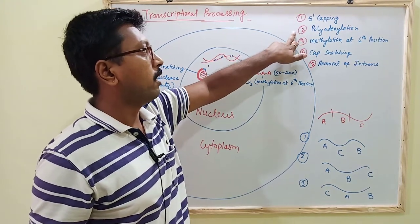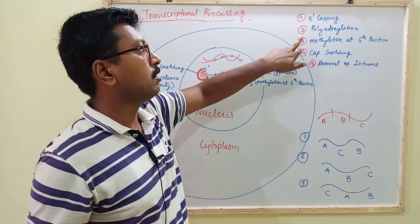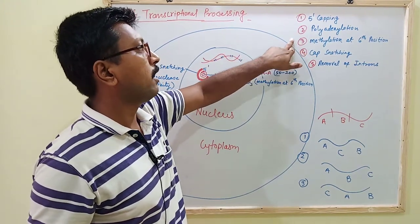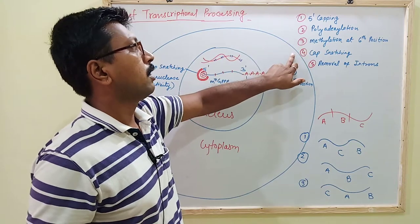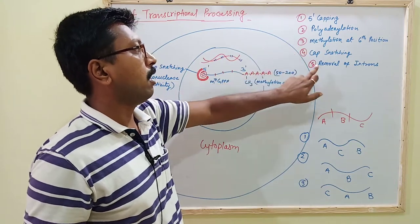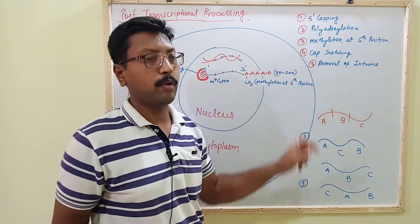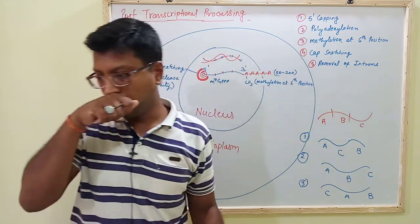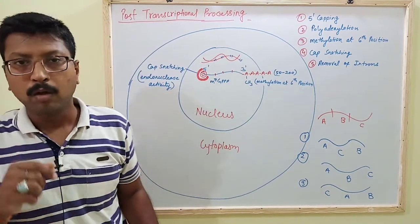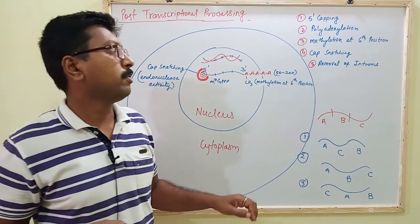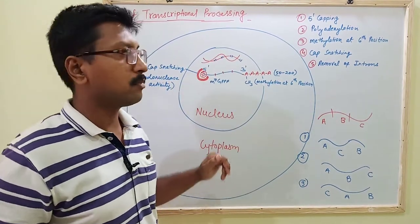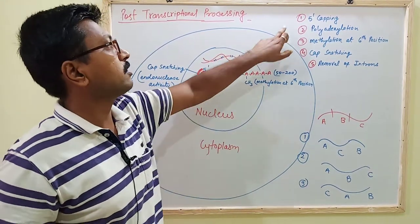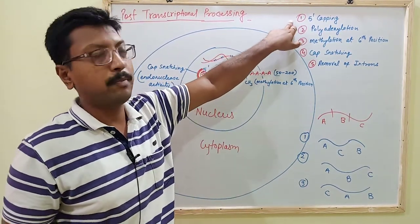second, polyadenylation; third, methylation at the sixth position; fourth, cap snatching; and fifth, removal of introns. Let me go through them one by one.